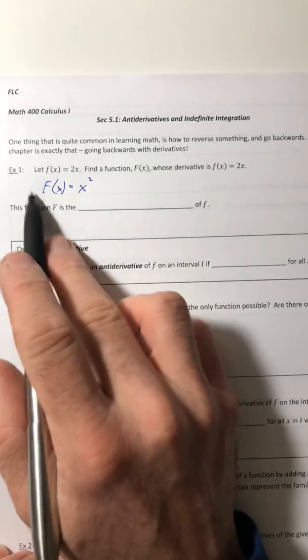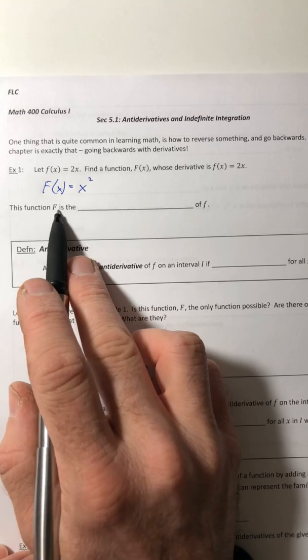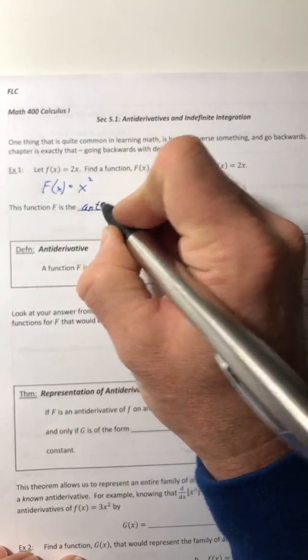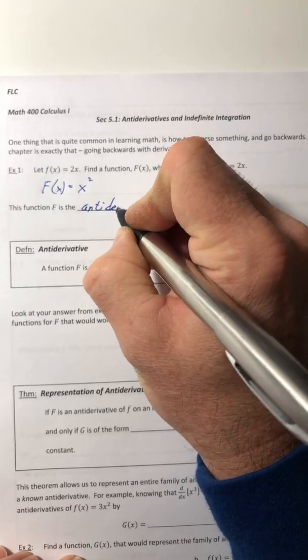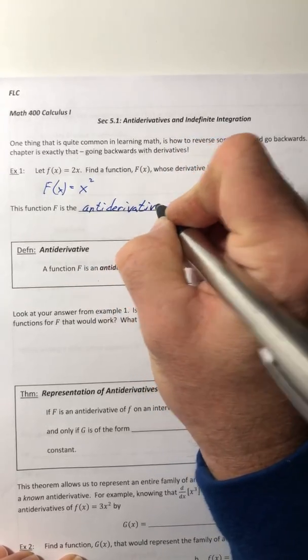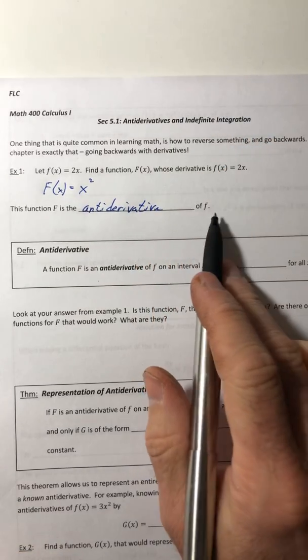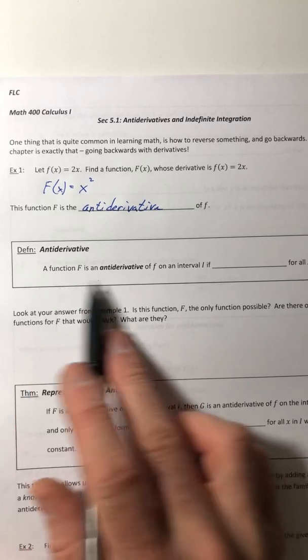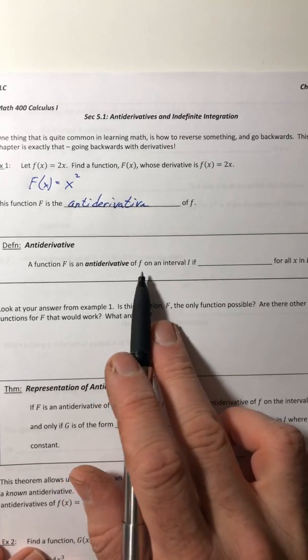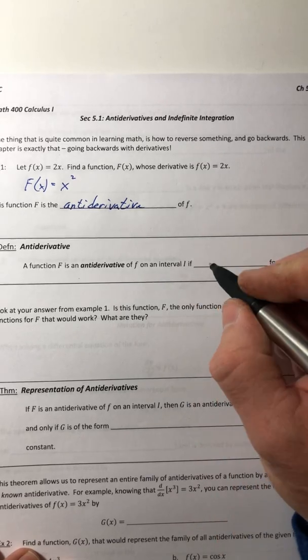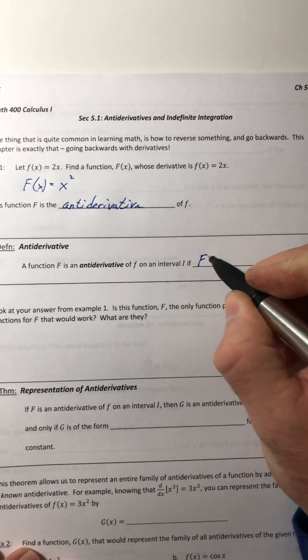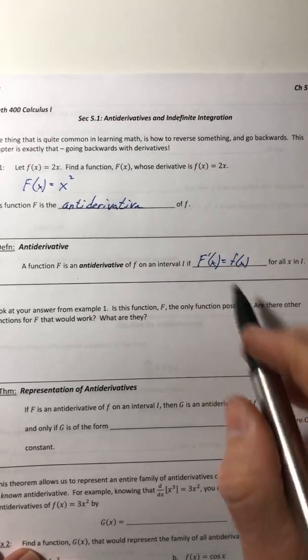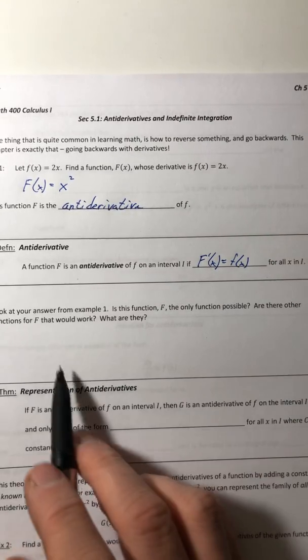So now, this is the type of thing that we're going to be doing. So this function capital F is the antiderivative of that initial function little f. So here's our definition for it. It's an antiderivative of a function f on an interval i if the derivative of capital F of x is equal to little f of x.